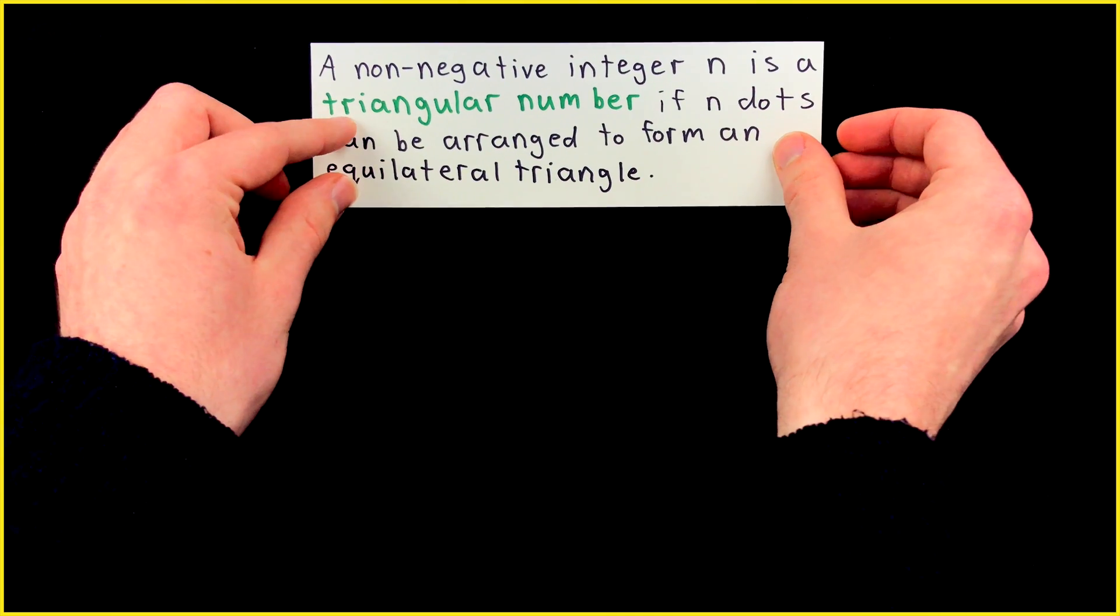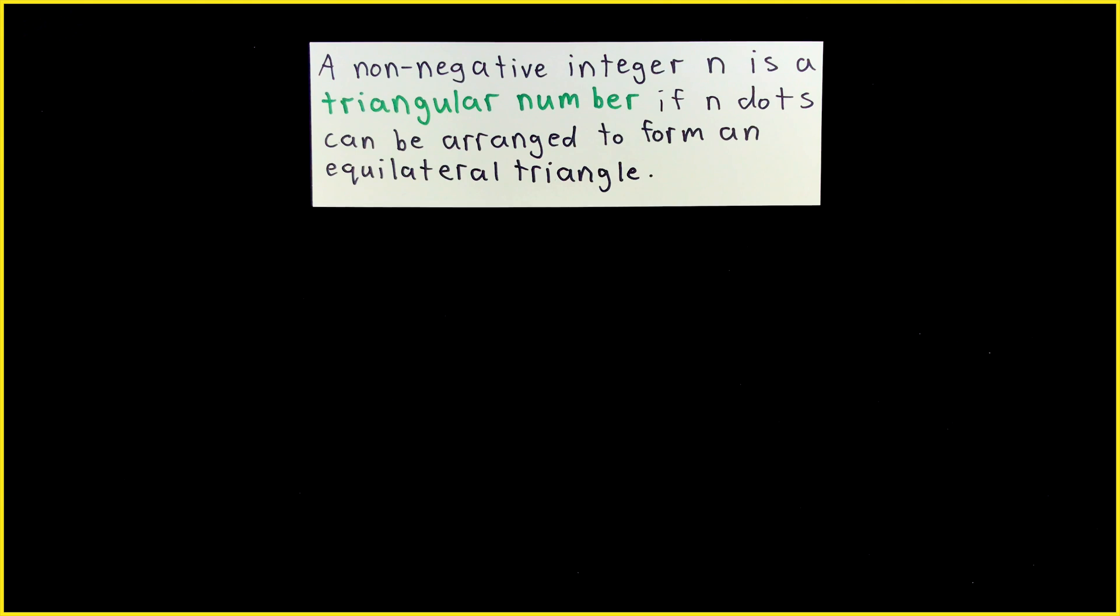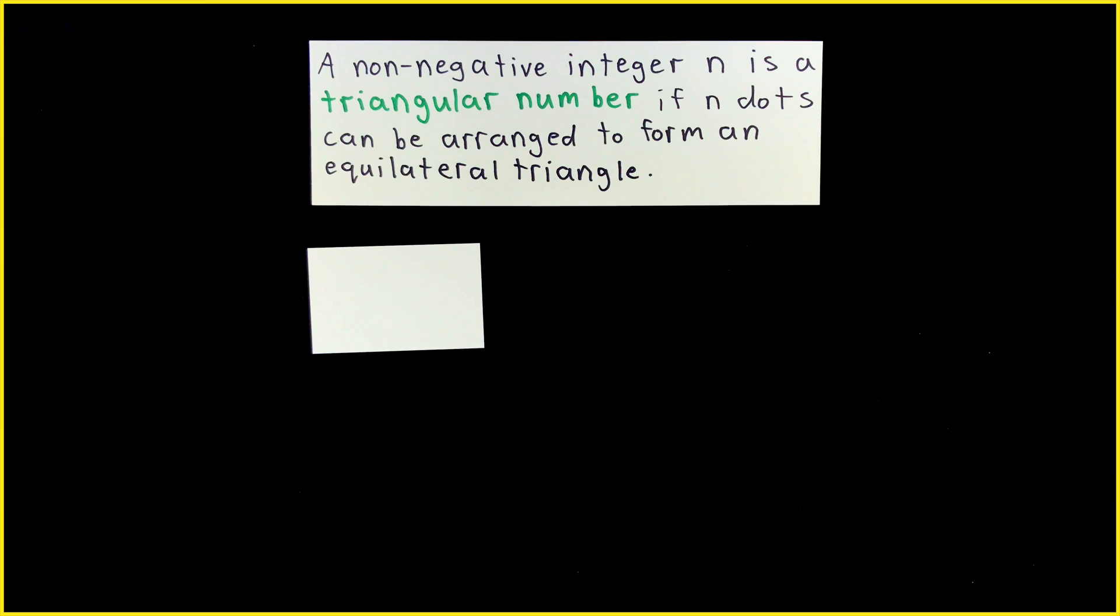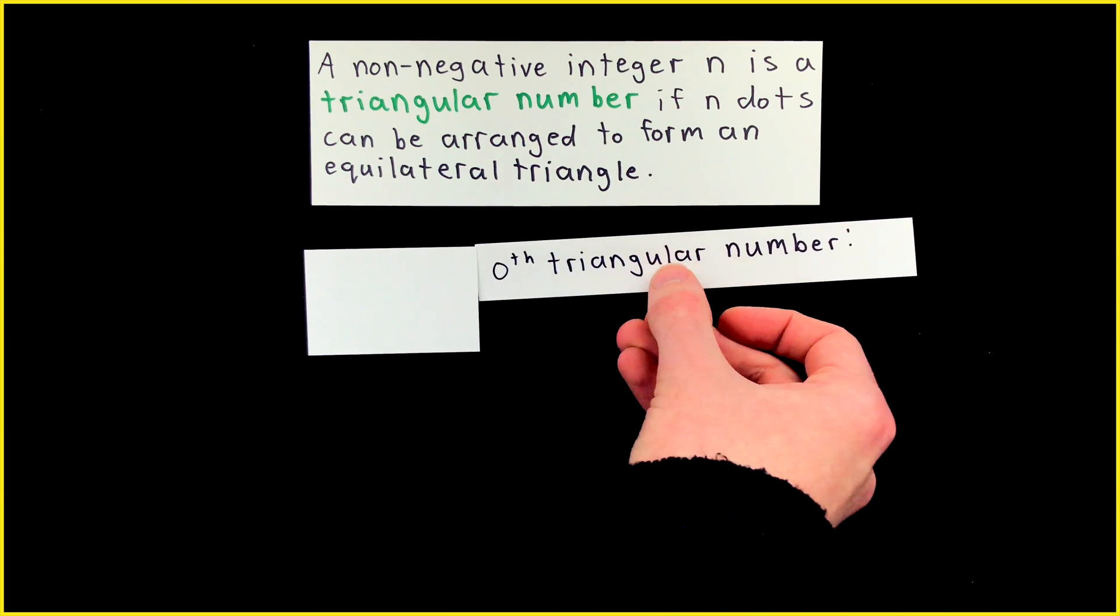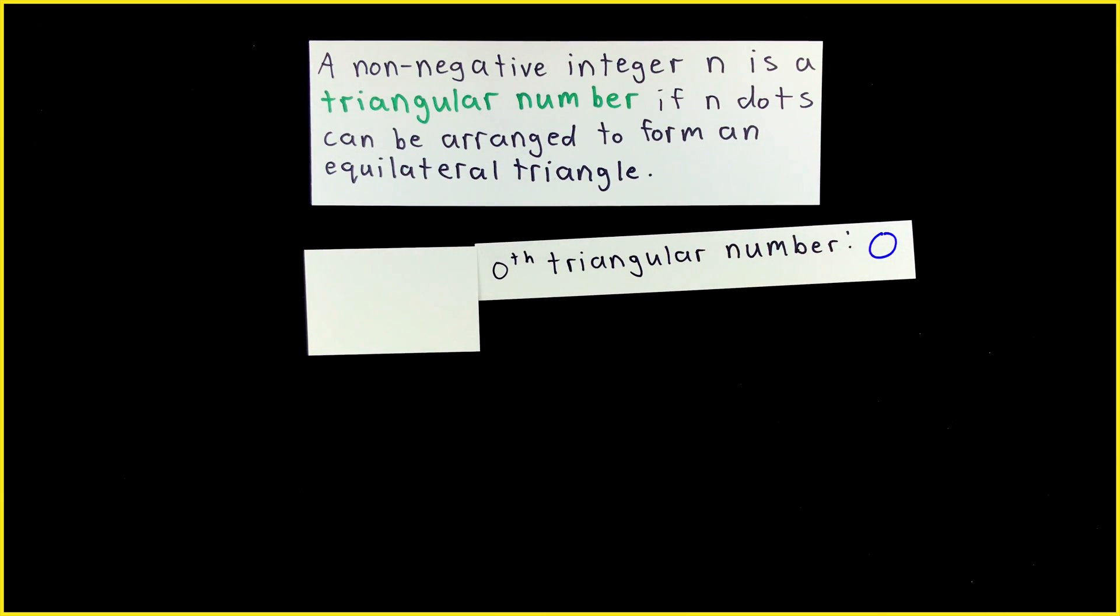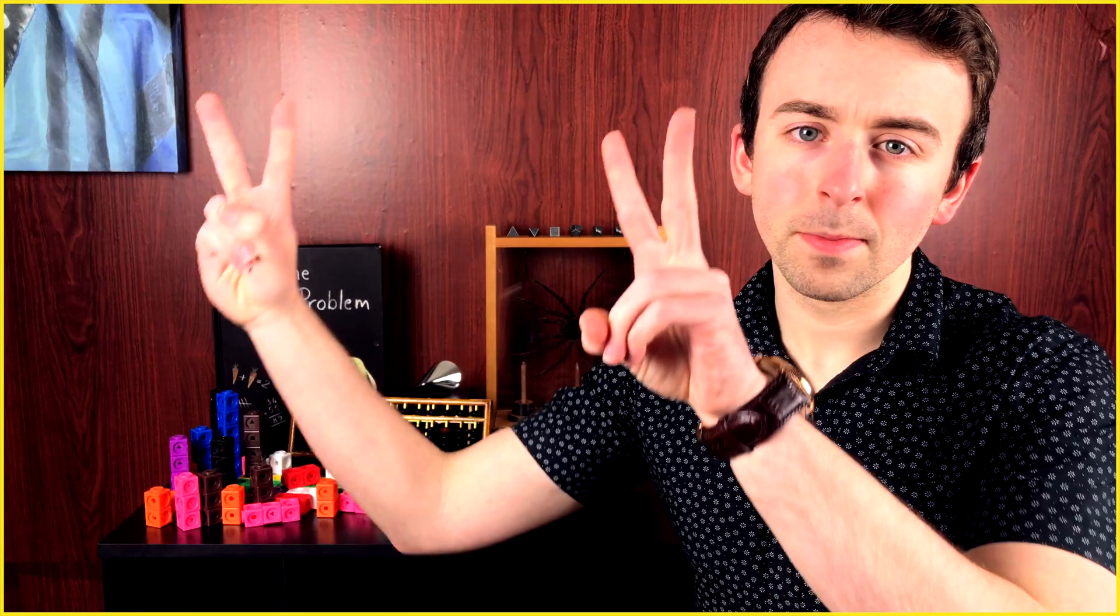For a non-negative integer n to be a triangular number, it must be possible to fill an equilateral triangle with n dots. What does that mean? Well, check this out. It's zero. The zeroth triangular number. Using zero dots, we can create an equilateral triangle with three sides, all of length zero.